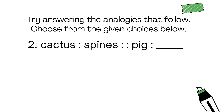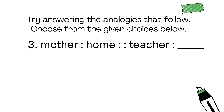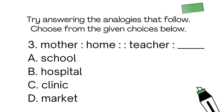Number two: cactus is to spines as pig is to blank. Letter A, piglet. Letter B, soul. Letter C, bacon. Or Letter D, bristles. For the last number: mother is to home as teacher is to blank. Letter A, school. Letter B, hospital. Letter C, clinic. Or Letter D, market.